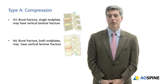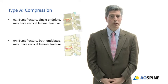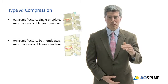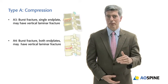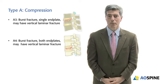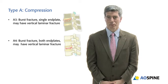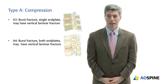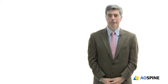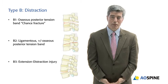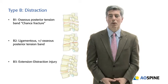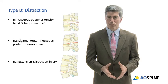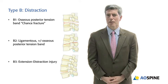Or you could have a burst fracture. You could either have a single endplate involved — either the superior or inferior — and that would be an A3. Or you could have both endplates involved, and that would be an A4. The distraction injuries are more severe than the A-type injuries, and you're really focusing on significant separation of the spinal elements.